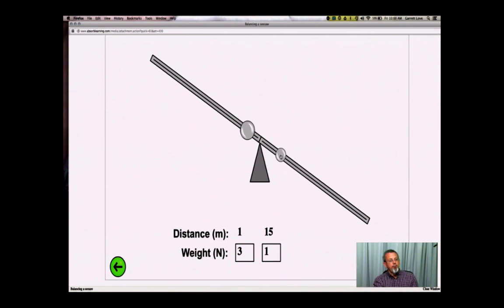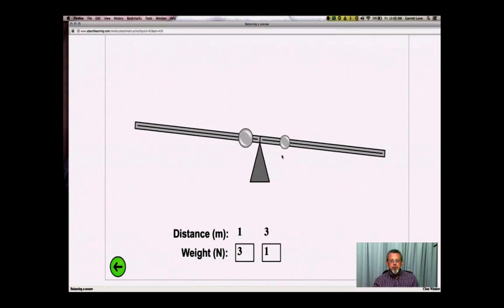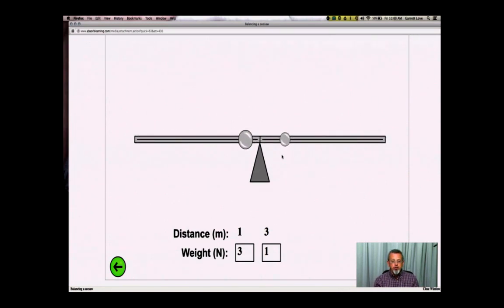So could somebody describe for me, if I'm trying to describe this mathematically, how do I figure this out? If I have 2 weights, how do I figure it out?